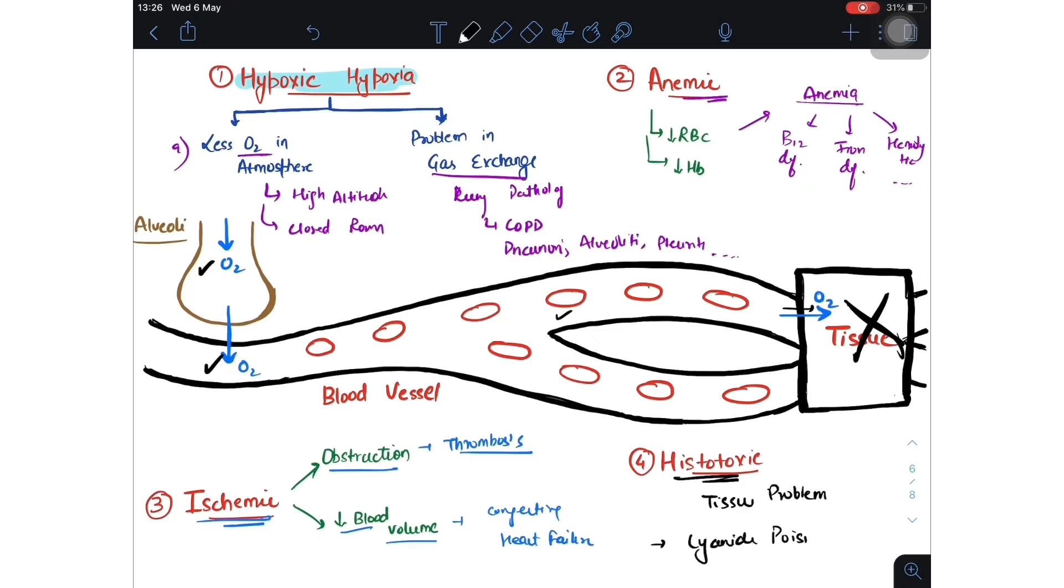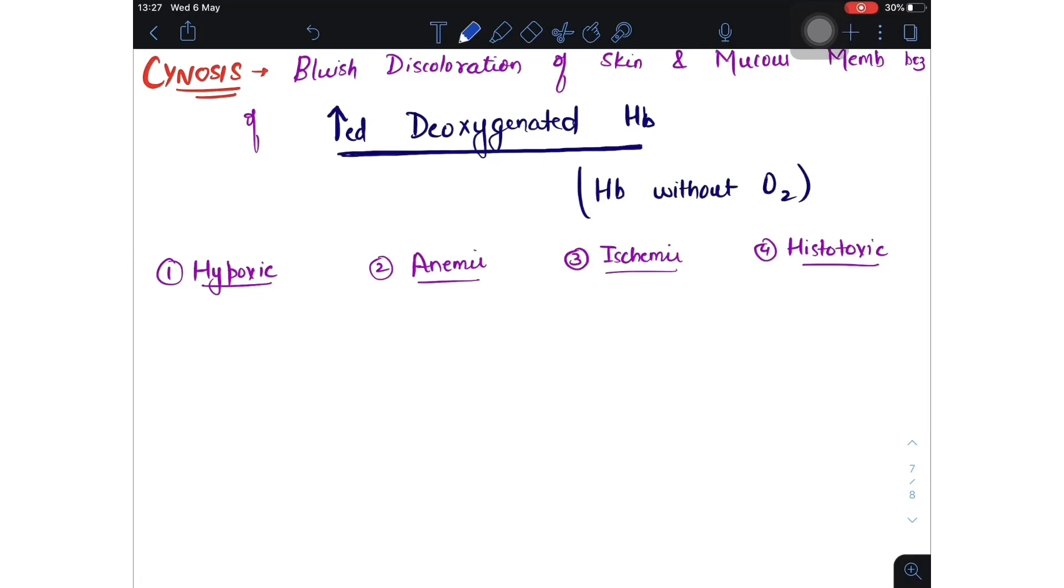Now the next thing: in which type of hypoxia does cyanosis take place? Cyanosis is blue discoloration of skin and mucous membrane because of increased deoxygenated hemoglobin. This is important: hemoglobin without O2 is important.